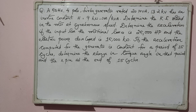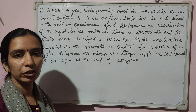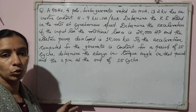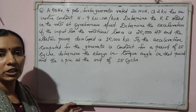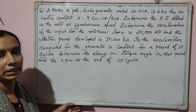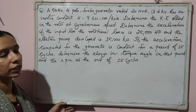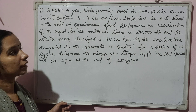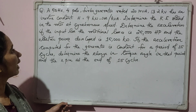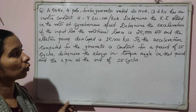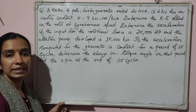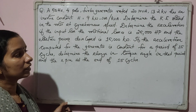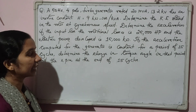In this lecture, we are solving a problem which involves the application of the swing equation. The question is: a 50 Hz four-pole turbo generator rated 20 MVA, 13.2 kV has an inertia constant H equal to 9 kilowatt-seconds per kVA. Determine the kinetic energy stored in the rotor at synchronous speed. Determine the acceleration if the input less the rotational losses is 25,000 hp and the electric power developed is 15,000 kilowatt. If the acceleration computed for the generator is constant for a period of 15 cycles, determine the change in torque angle in that period and the RPM at the end of 15 cycles.